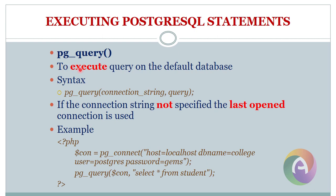The first one is PG query — to execute a query on the default database, the current opened database. This is the connection string which opens the database and the query is executed. The syntax is: PG query with a connection string in the bracket. If the connection string is not specified, then the last opened connection is used. If the connection string is specified, it is specified in the option along with the password.